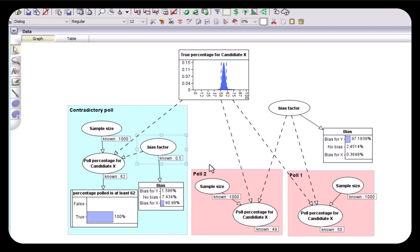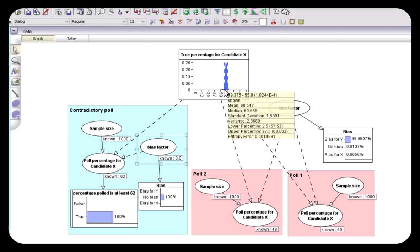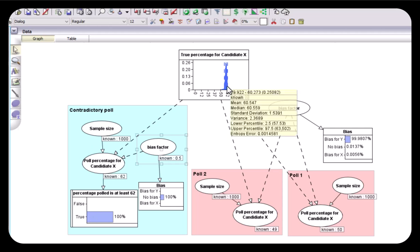We still know nothing about any potential bias in polls one and two. Then in this case when we run the model we're now almost certain there's bias in these polls, and the true percentage learned has shifted much closer to the 62 here.